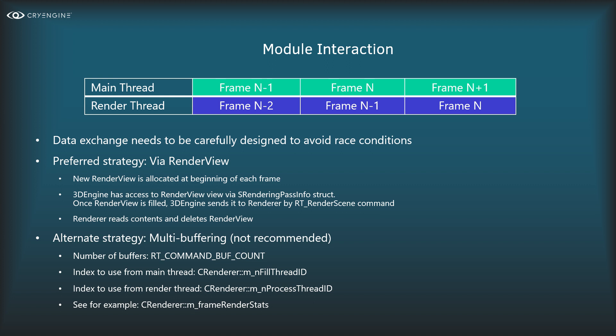For commands we use the command buffer approach. For actual data — objects and such — we need something more performant, since we can't send a million commands. So instead we have what we call a render view: a class allocated at the beginning of the frame in the 3D engine. All algorithms in the 3D engine fill it with data, and when done it's passed as a whole to the renderer. When the renderer is done, it returns it to a pool for reuse.